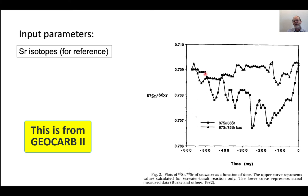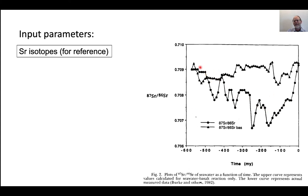Strontium isotopes — this is what I was talking about. This is the strontium isotope record. If you were to look at what you'd get without any input from weathering of the continents, it should look like a baseline. There's a difference between the two isotope compositions that has been interpreted in terms of weathering of silicates and consequently the drawdown of CO2.